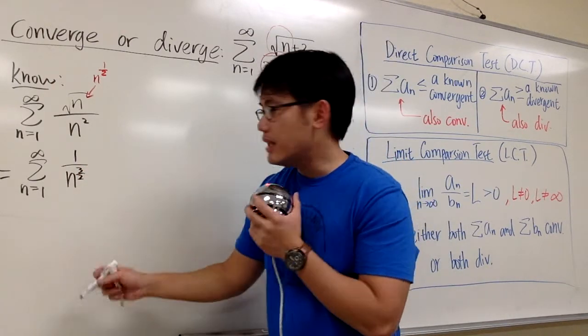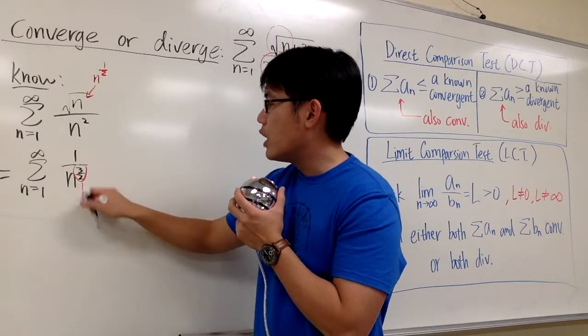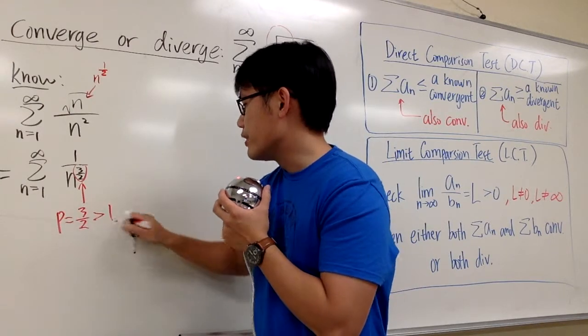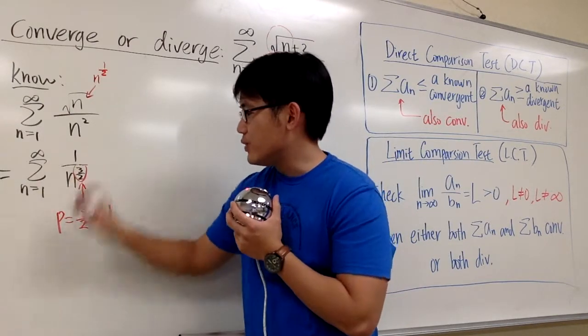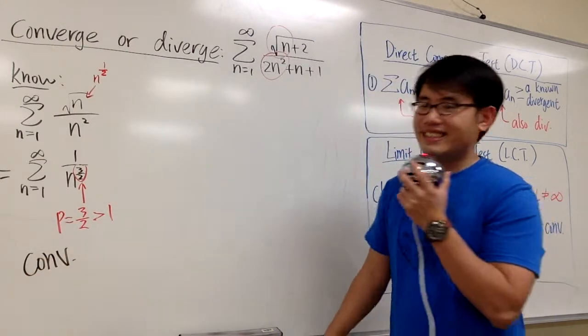What we can say is, because this is in the form of 1 over n to the p power, where p is 3 half, and more importantly, that's bigger than 1, therefore this series converges by the p-series test.